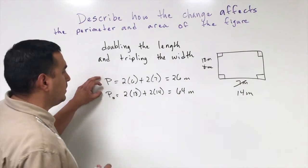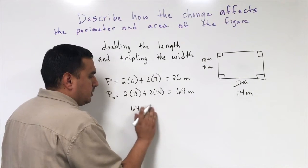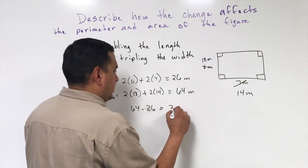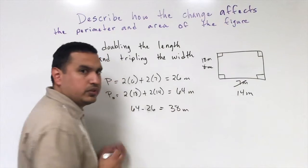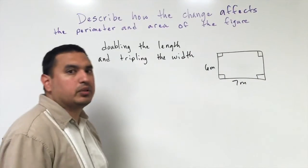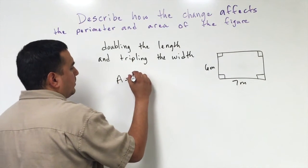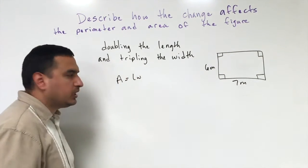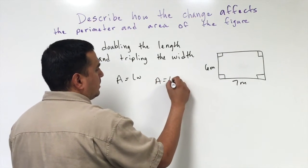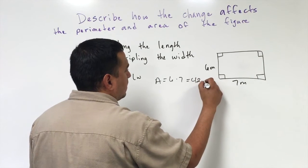Looking at the change, I do 64 minus 26, and that gives 38 meters as the difference. Now let's look at what happens with the area. The formula for a rectangle is length times width, so the original area is 6 times 7, which is 42 meters squared.